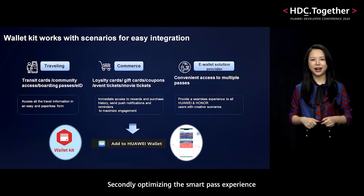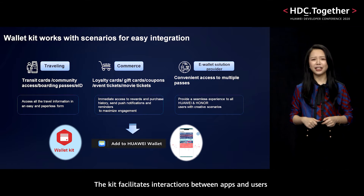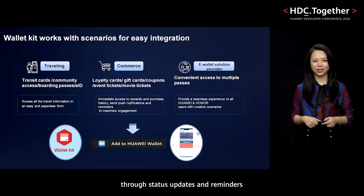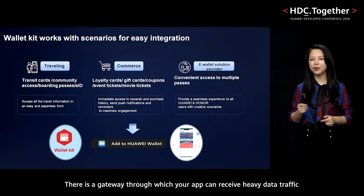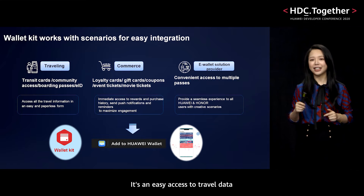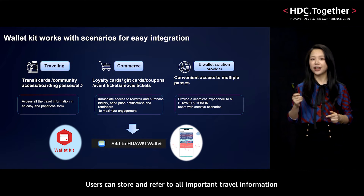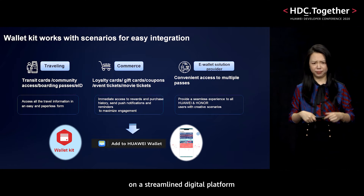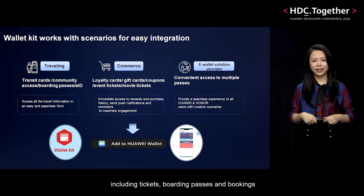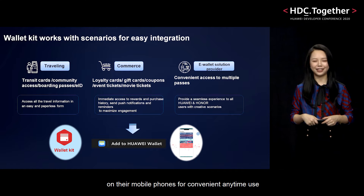Secondly, optimizing the smart pass experience — the kit facilitates interactions between apps and users through status updates and reminders. Thirdly, customizing the pass detail page on Huawei Wallet, which is the gateway through which your app can receive heavy data traffic. Users can store and refer to all important travel information including tickets, boarding passes, and bookings on their mobile phones.